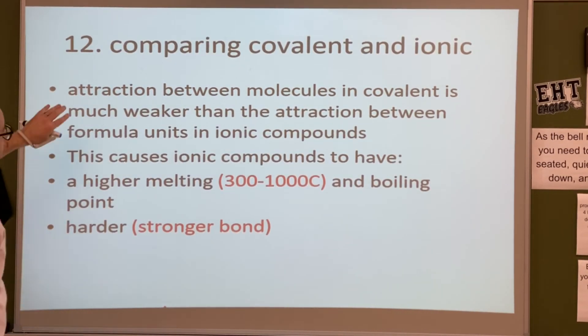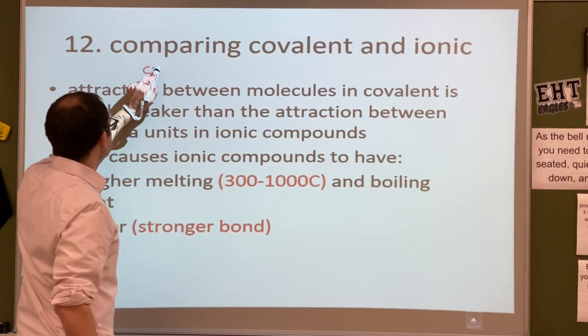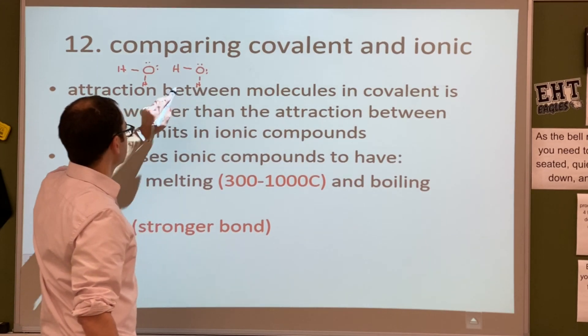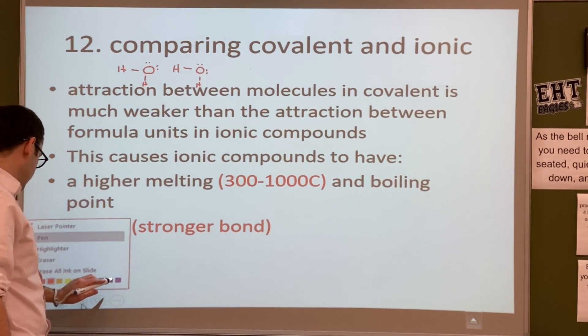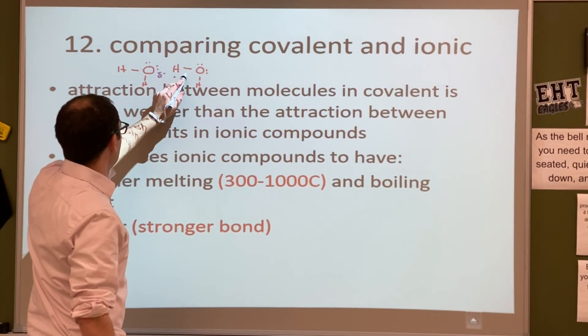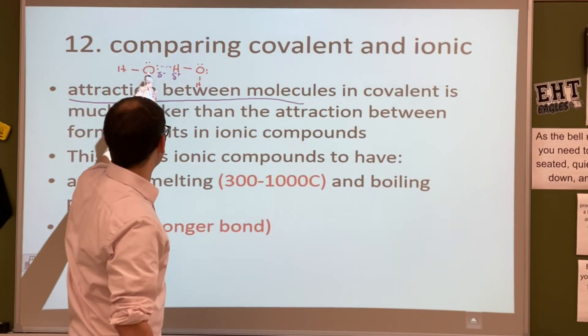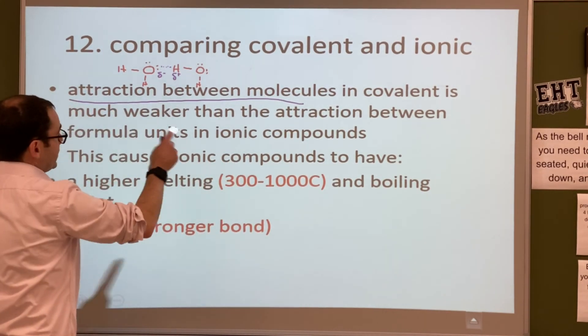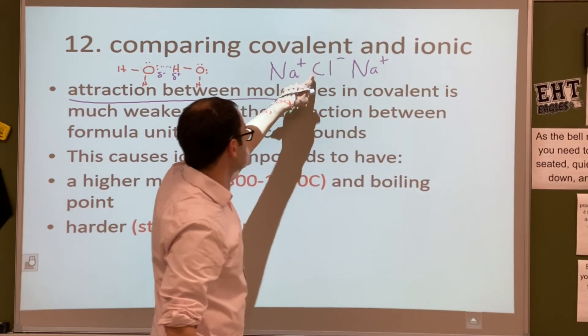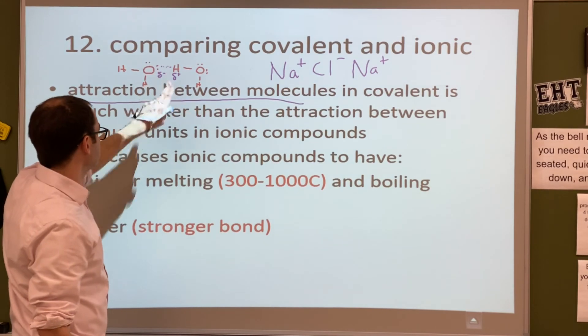And then, there's comparing covalent and ionic. So, the attraction between molecules and covalent is much weaker than the attraction between formula units. So, I want to be specific on what we're talking here. So, if I was to draw a water molecule and then another water molecule, what are the attractive forces between these two water molecules? What negative? The hydrogen is slightly positive. So, there's a hydrogen bond between those two, right? So, that's what it's talking about here, the attraction between molecules. So, it's talking about this attraction right here. And then, it's saying it's much weaker than the attraction between formula units, which would be that whole NaCl, NaCl, you know, if we have this big pattern of them just repeating.